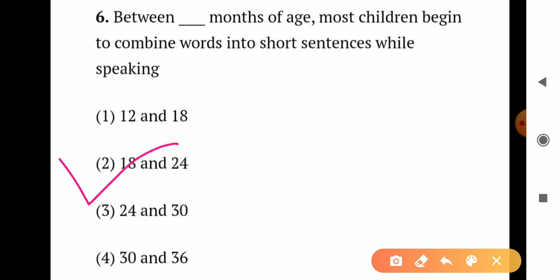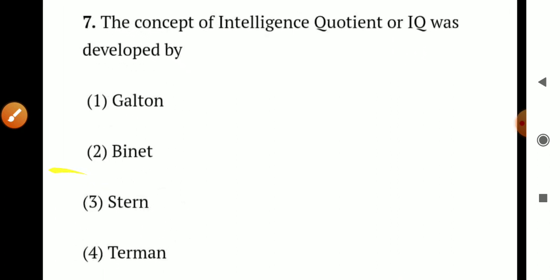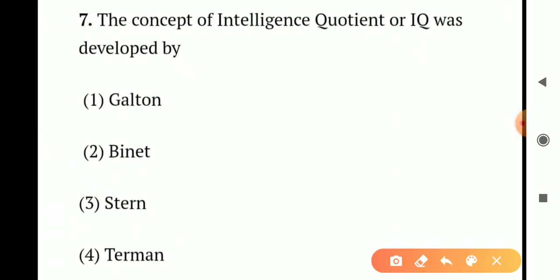Question number 7. The concept of intelligence quotient or IQ was developed by: Option 1 - Guilford. Option 2 - Binet. Option 3 - Spearman. Option 4 - Thurstone. The IQ concept was developed by Alfred Binet. So the correct answer is Option 2 - Binet.